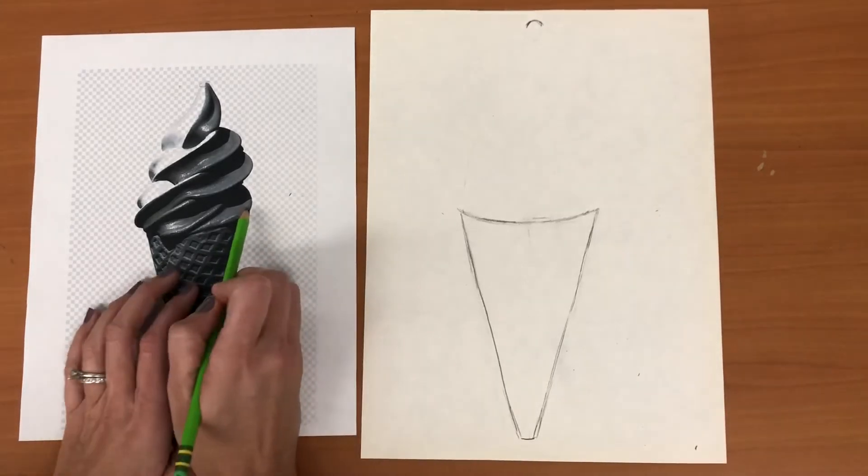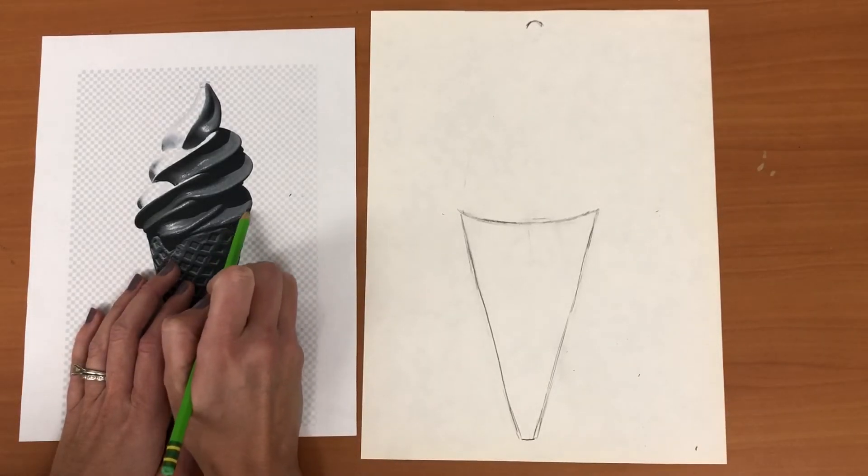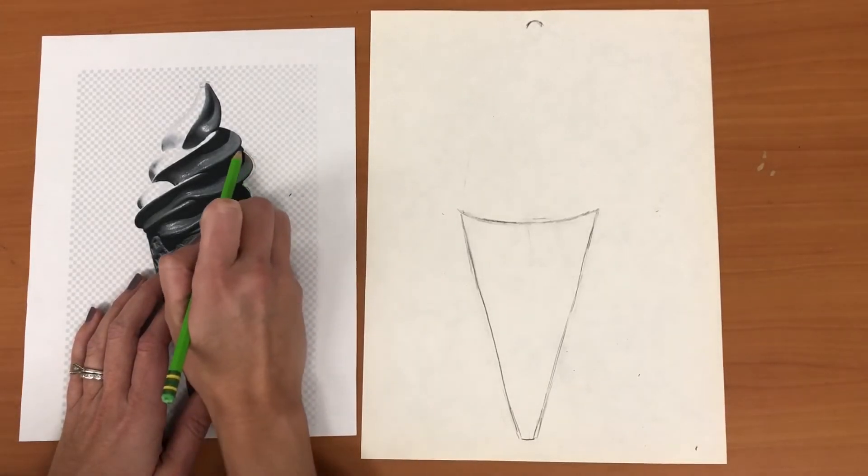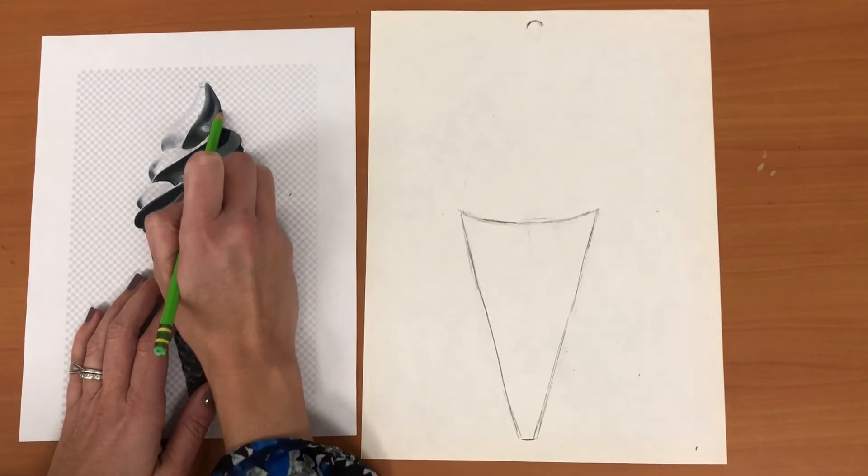Okay now when I look on the right leading up to that point we have one, two, three bumps and then it goes to the top.